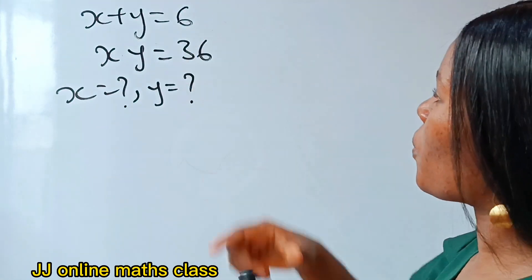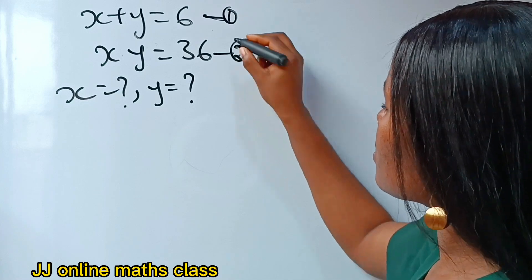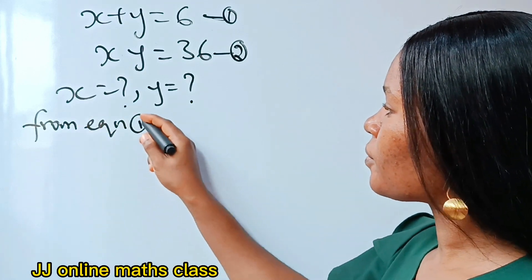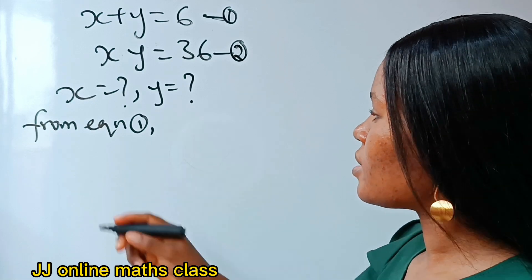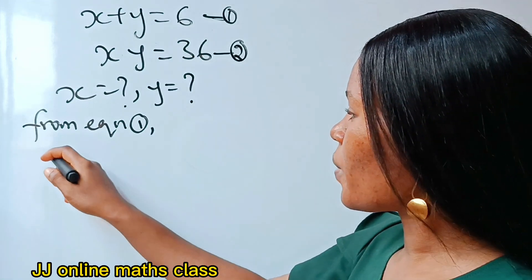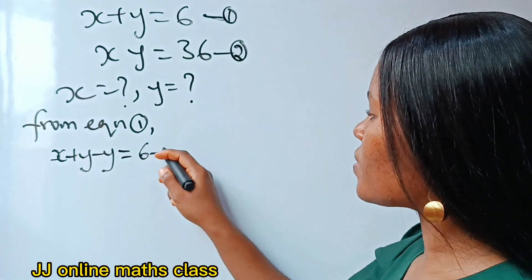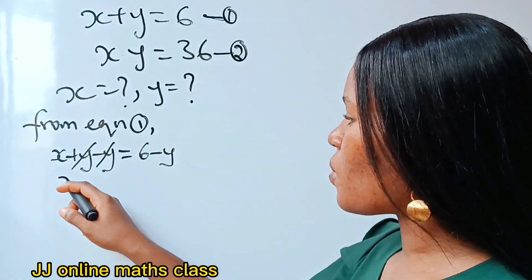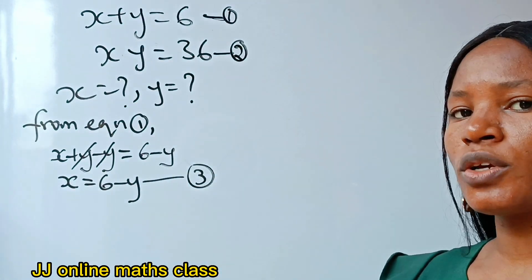First of all, from equation 1 — let's call this equation 1 and this equation 2 — from equation 1, we can make x the subject of the formula. If we do that, we are going to subtract y from both sides of the equation. So we have x plus y minus y equals 6 minus y. y minus y is 0, so we have that x equals 6 minus y. Let's call this equation 3.